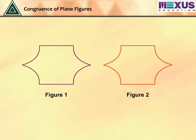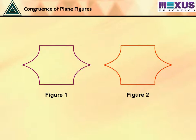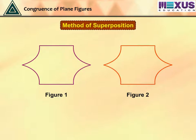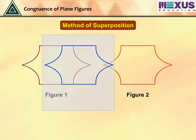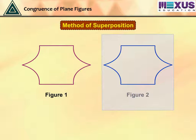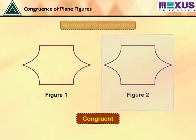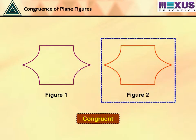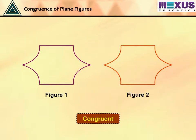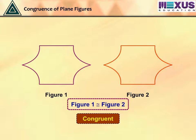See these plane figures. Can you say whether they are congruent? Let us check by using the method of superposition. Trace a copy of one of them and place it over the other, or cut out one of them and place it over the other. If they cover each other completely, they are said to be congruent. Here we can see that figure 1 is congruent to figure 2, and it can be written as figure 1 congruent to figure 2.